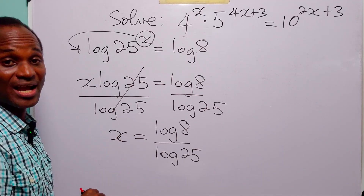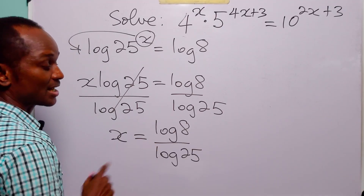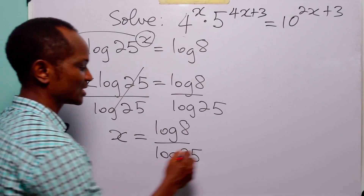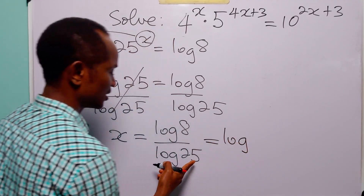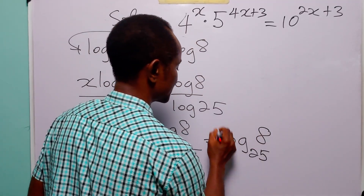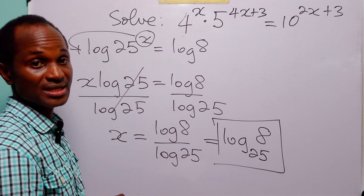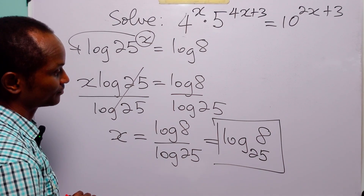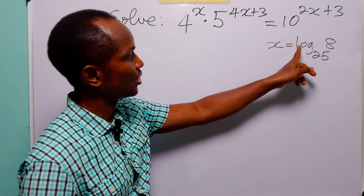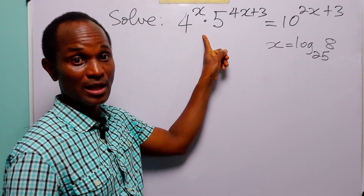So this is the value of x that satisfies this exponential equation. You can leave your answer in this form, or by applying the change of base formula, we can write this as log to base 25 of 8. To check for the correctness of our answer, we are going to substitute log to base 25 of 8 for x into the original equation.